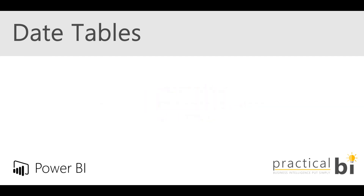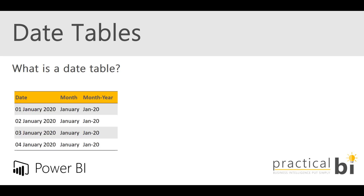Before we dive into a practical example, let's first look at what a date table is and why we might need one. A date table is simply an additional table of data that has a date column as the key column, with additional columns appended that give us additional information about that particular date.